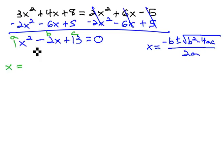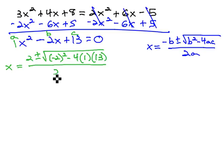So, plugging those into our equation, x is equal to the opposite of b, or positive 2, plus or minus the square root of b, negative 2 squared, minus 4a, which is 1, times c, which is 13, all over 2a, which is 1.